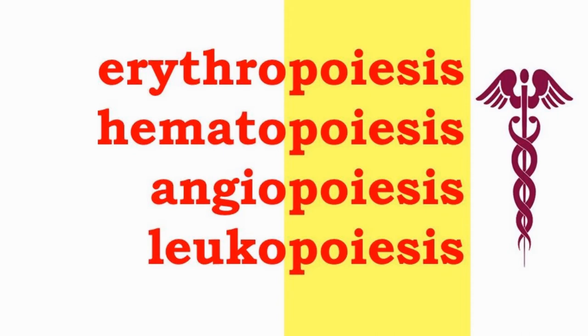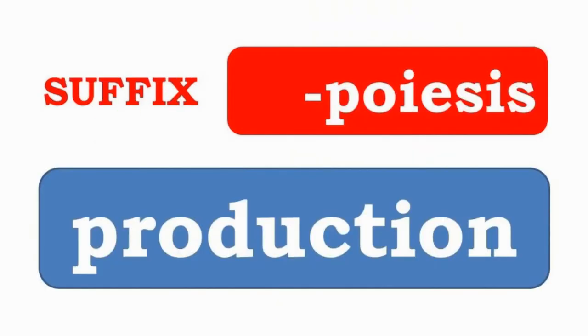Erythropoiesis, hematopoiesis, and leukopoiesis have the suffix -poiesis, which indicates production.